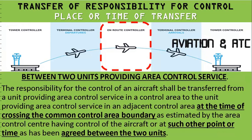Transfer of responsibility for control between two units providing area control service: responsibility for control of an aircraft shall be transferred at a specific time based upon the crossing of the common control area boundary, or at such other point or time as has been agreed between the two units. Normally they determine the estimate of the common FIR boundary crossing point, and at that particular time or place transfer control to the next area control unit.